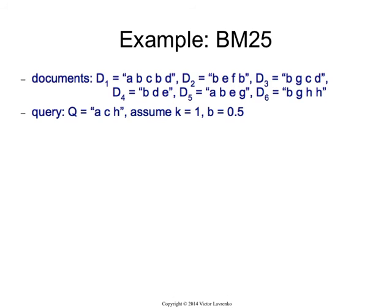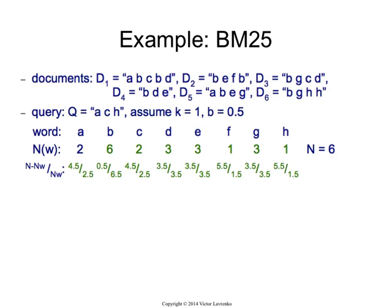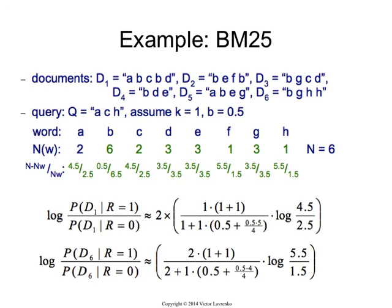So in the slides you have an example of how to compute BM25 for a collection of documents and a query. I'm not going to go through that.